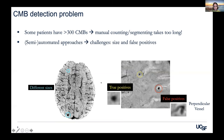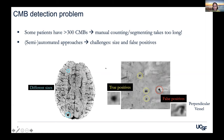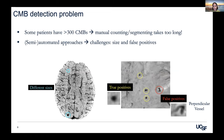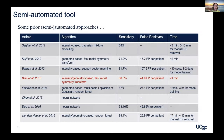A key challenge in microbleed detection is distinguishing true microbleeds from mimics. For example, two structures may appear quite similar — round in shape — on a single slice, but as you go through the slices, one circled in red is clearly a perpendicular vessel and therefore a false positive. This is a problem that the detection algorithms need to address.